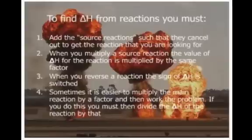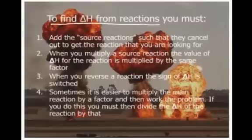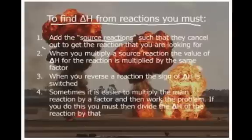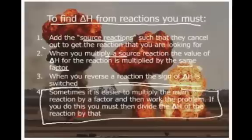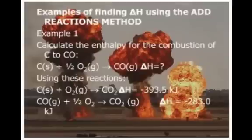Now, here are just basically a set of rules that you have typed into your notes there. How do you find the delta H from reactions? First of all, you must add the source reactions such that they cancel out. And when you multiply source reaction, the value of delta H is multiplied by the same factor. When you reverse a reaction, the sign of delta H is switched. And sometimes it's easier to just multiply the main reaction by a factor so you can get rid of all your fractions. And source reaction, guys, those are given to you.